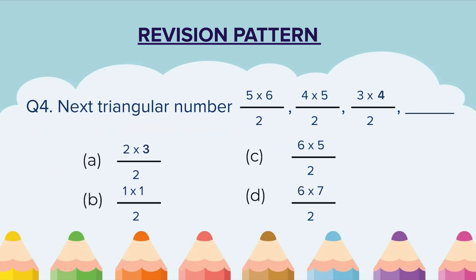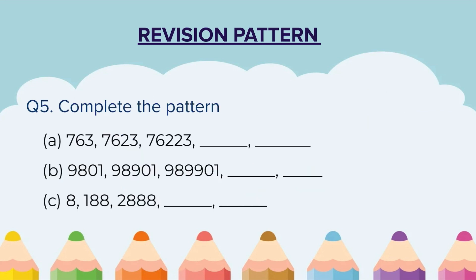Question 4: The next triangular number in the series 5×6/2, 4×5/2, 3×4/2 will be dash. Please note that these triangular numbers are in decreasing order, and you have to tell the number which should come next.